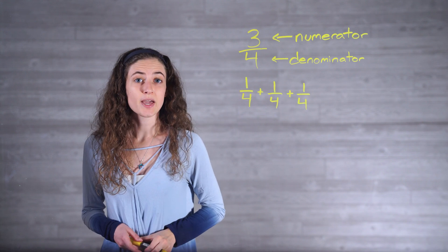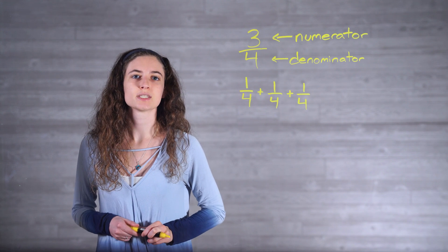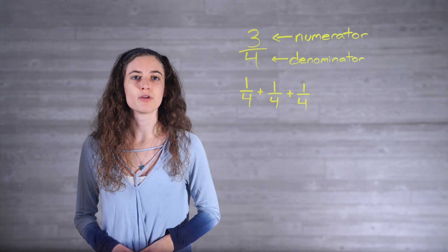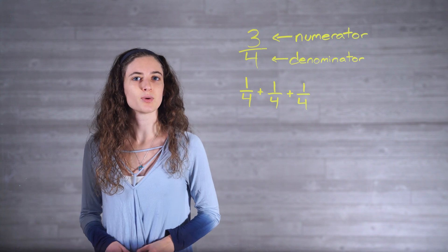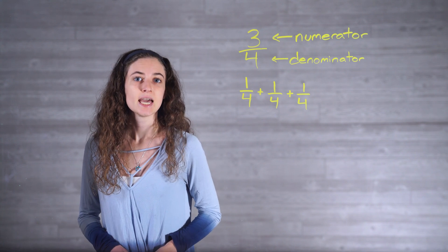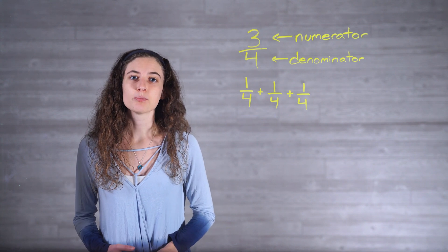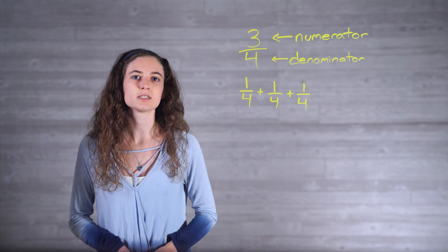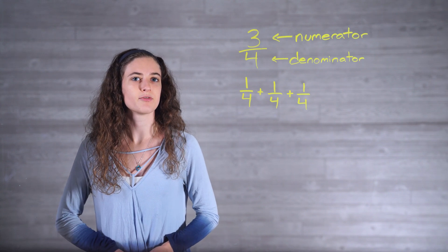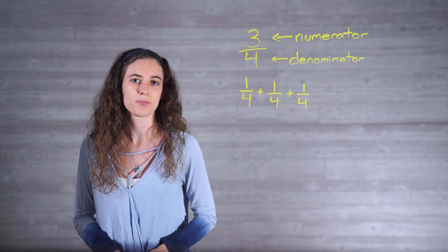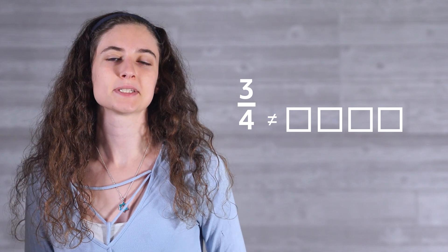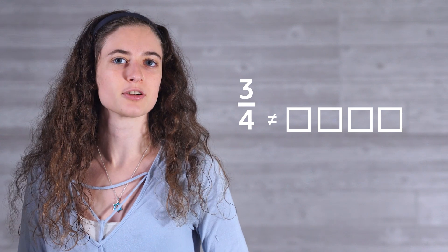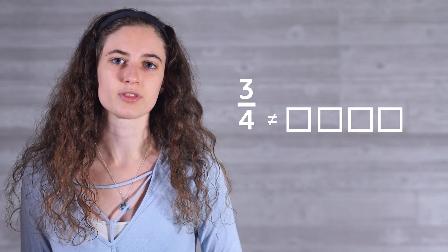So the fraction 3/4 is really saying 3 parts out of 4 parts total. It can also be helpful to visualize 3/4 as simply 1/4 plus 1/4 plus 1/4. It is very important to remember that a denominator of 4 does not represent the value of 4 — a denominator of 4 represents the value of 1 that is divided up into 4 equal parts, or fourths.